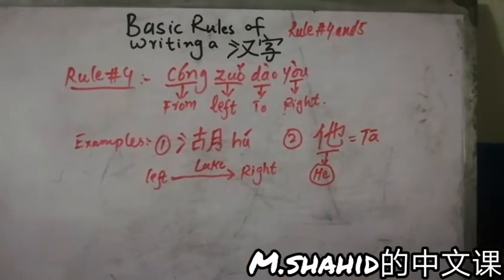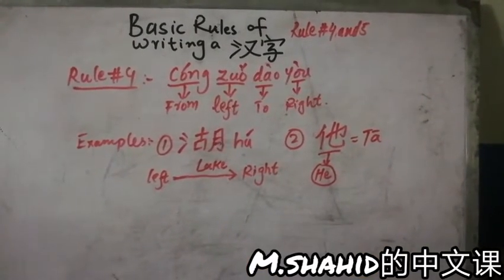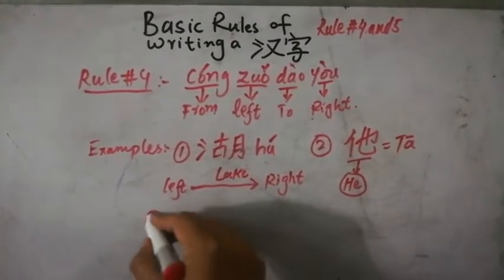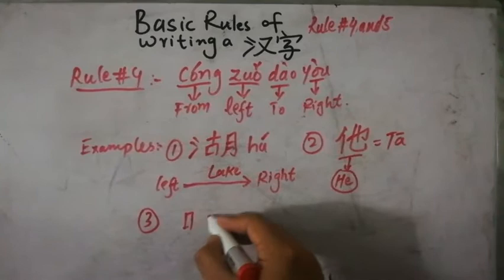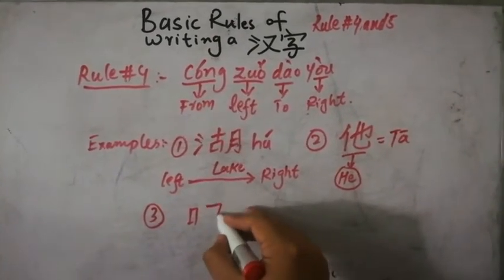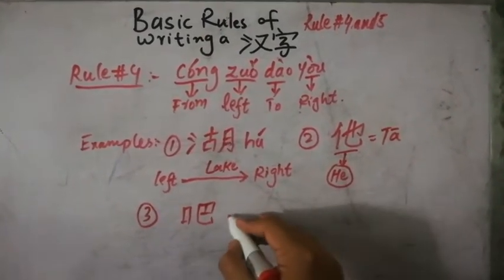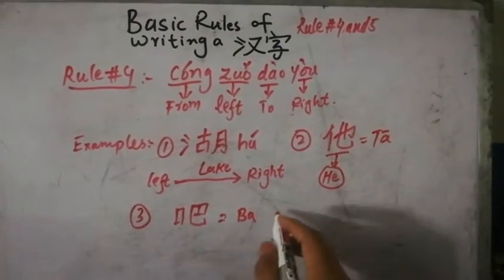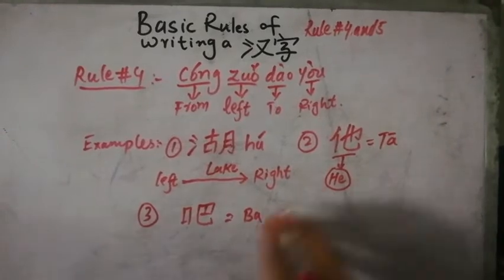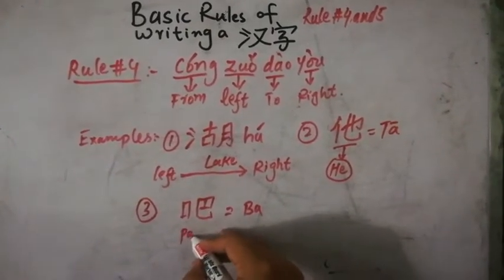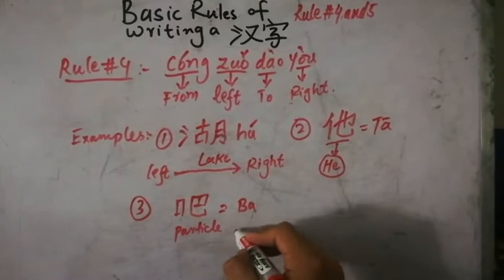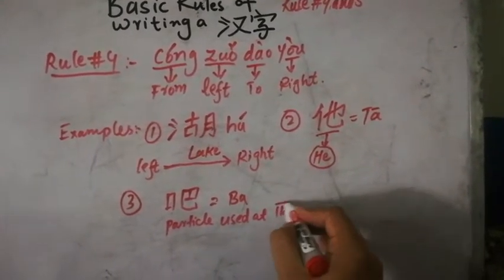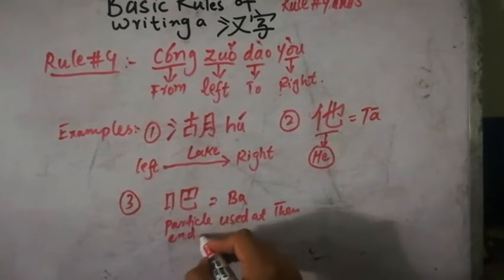He, he, he. 吧 ba, ba, ba means it is a particle used at the end of a sentence.